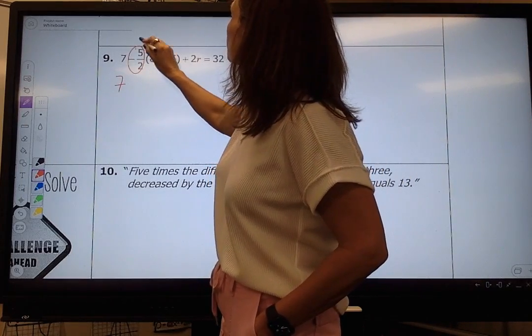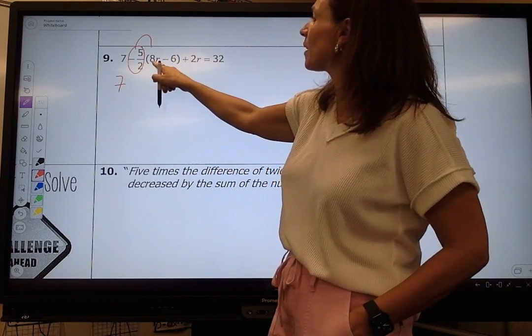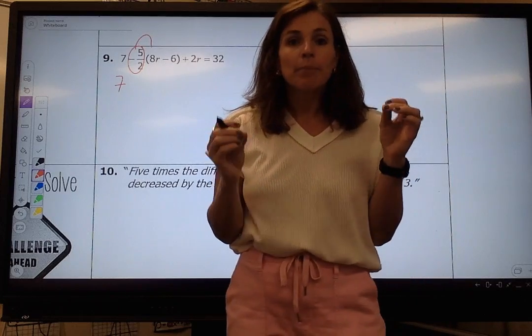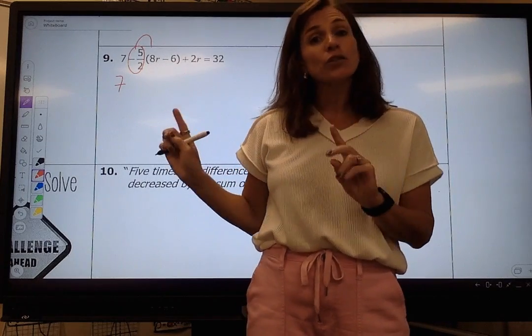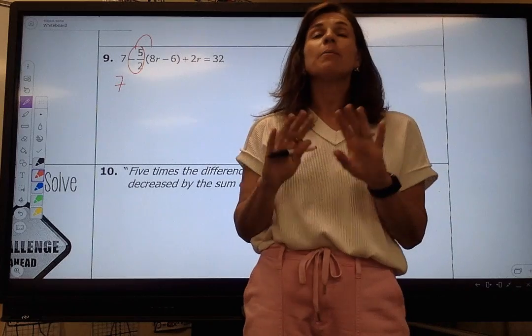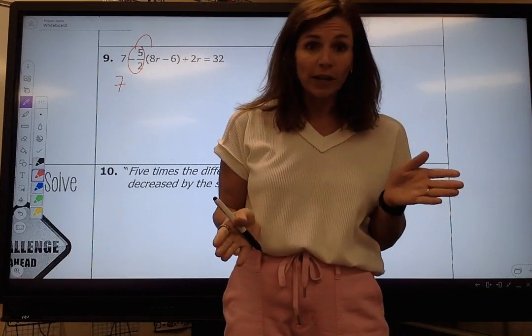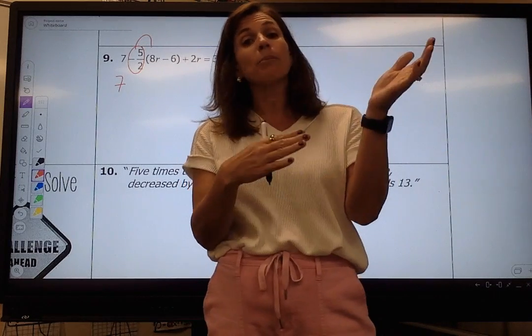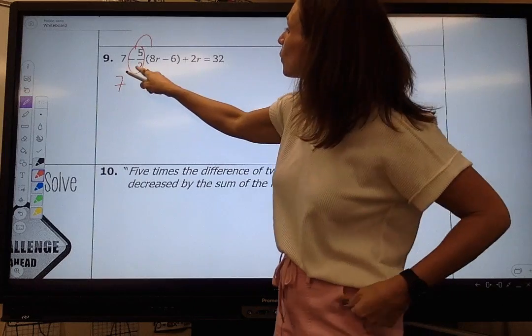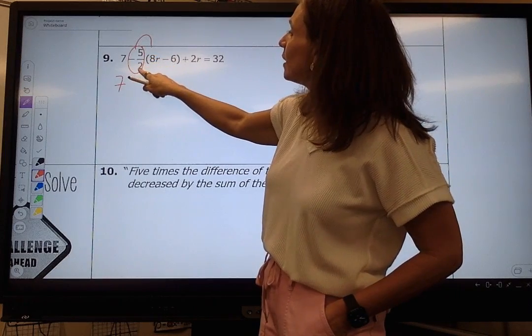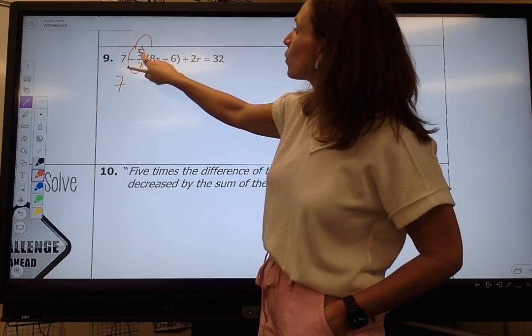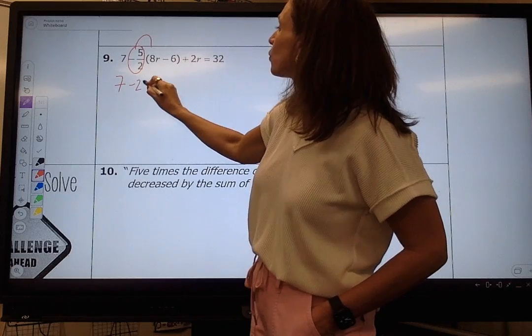And now I'm multiplying a negative 5 halves times 8. Please make sure you're able to do this in your head. If you're still struggling with that skill, it is a perfect opportunity to come to tutorials so we can practice fractions. You are cross-reducing 2 and 8. Two goes into 8 four times. Four times negative 5 is a negative 20R.